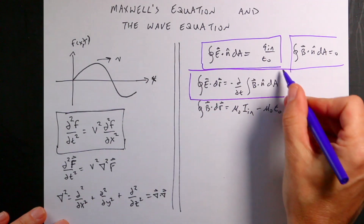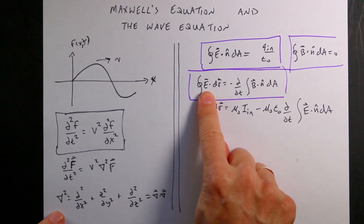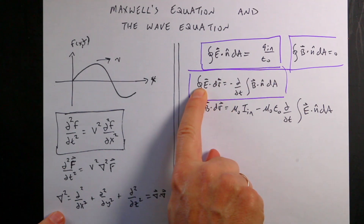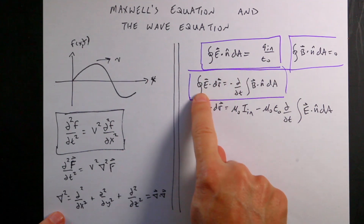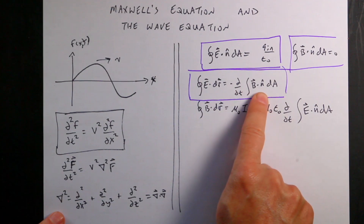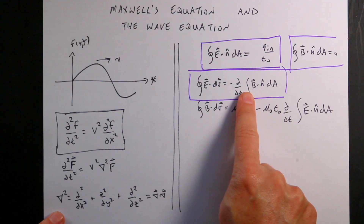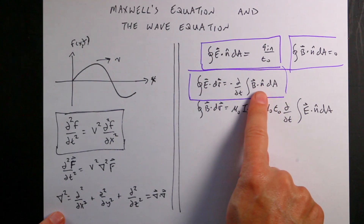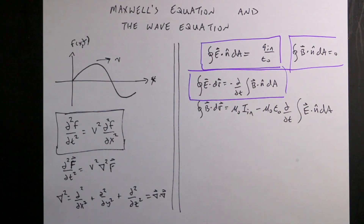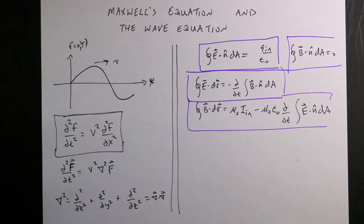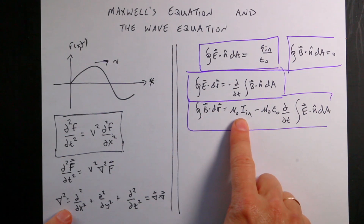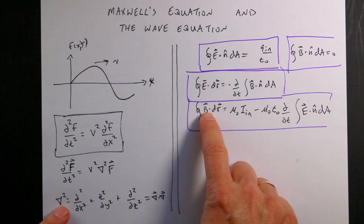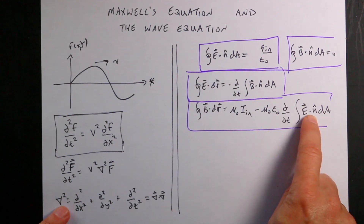Faraday's Law says that the path integral of the electric field E·dr over some closed path is related to the time derivative of the magnetic flux through the surface bounded by that path. So if you change the magnetic field with time, you get a curly electric field. Finally, the Ampere-Maxwell Law says B·dr around some closed path has two contributions: an electric current μ₀·I through the bounded surface, and the time rate of change of the electric flux.